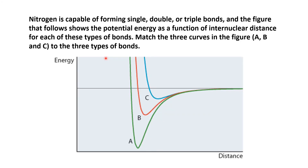Now let's look at a practice question. Nitrogen can form single, double, or triple bonds. A figure shows potential energy as a function of internuclear distance for each bond type, with three curves A, B, and C. We need to match each curve to its bond type. The graph is similar to the hydrogen molecule graph.